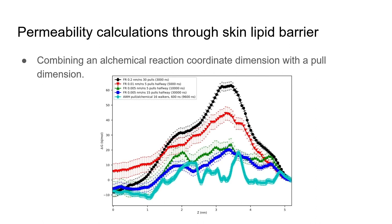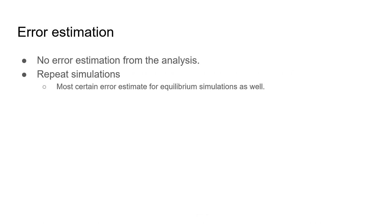One problem with AWH is that there is no built-in error estimation from the analysis, unlike BAR or MBAR which provide error estimates with results. To get a reasonable error estimate with AWH you need to repeat simulations — at least four or five times. However, repeating simulations is actually the best approach for equilibrium simulations too, since error estimates from BAR and MBAR are often somewhat underestimated if you don't properly sample all configurations at all lambda states.